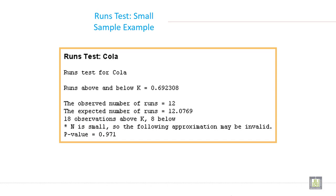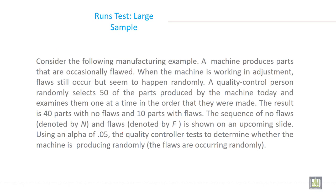This is the output generated from the computer. Run test for COLA: run above and below k equals 0.692308. The observed number of runs is equal to 12 while the expected number of runs is 12.0769. 18 observations above k and 8 below k. N is small, so the following approximation may be invalid. P value is equal to 0.971.